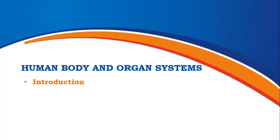Good evening everyone. We are doing the chapter 'Human Body and Organ Systems'. We have already done some parts of this chapter in our offline lectures, but we'll do it online now so that we understand every part in detail. As we have already read the textbook, we know that each and every organ in the human body has a certain system because of which it functions.